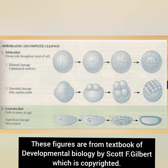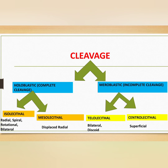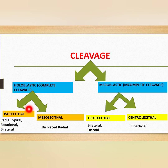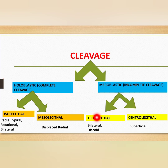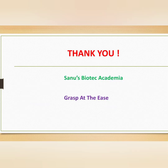To summarize: cleavage is the repeated mitotic division after fertilization, and the cells formed are called blastomeres. There are two main types: holoblastic complete cleavage and meroblastic incomplete cleavage. Holoblastic cleavage includes isolecithal cleavage (patterns: radial, spiral, rotational, bilateral) and mesolecithal cleavage (pattern: displaced radial). Meroblastic cleavage includes telolecithal cleavage (patterns: bilateral or discoid) and centrolecithal cleavage (pattern: superficial). That covers all embryonic cleavage types and their patterns.